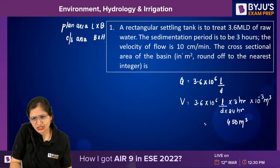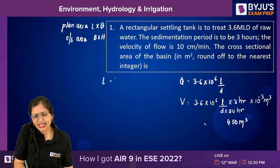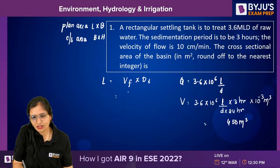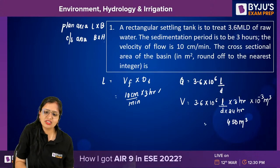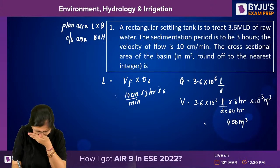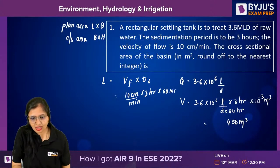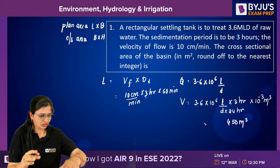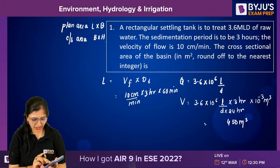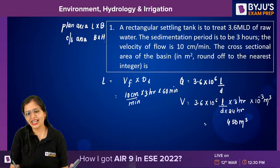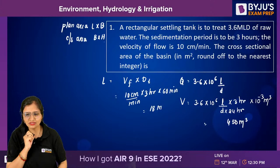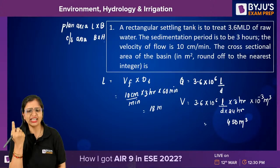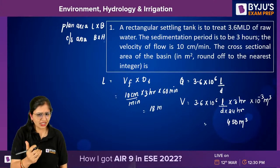Velocity of flow and detention time are given, so I can calculate length: velocity of flow × detention time = 10 cm/min × 3 hours × 60 minutes/hour = 1800 cm = 18 meters. So the length of the tank is 18 meters.